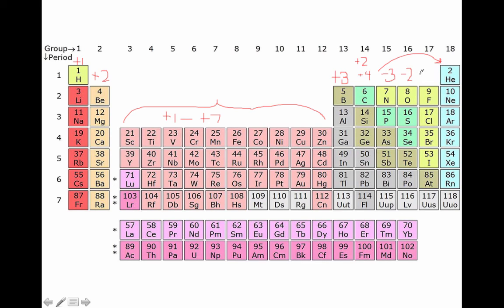And all of the halogens are only one electron away from becoming like a noble gas. So they form negative one ions.